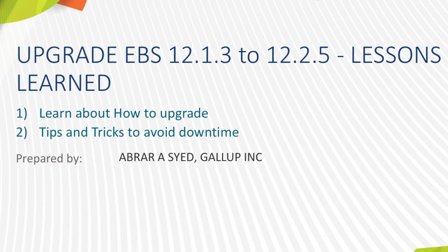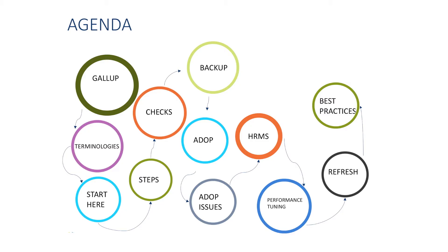Hi, my name is Abrar Saeed and I've been working as an Oracle DBA since 2008 with Gallup. I'm working for Gallup right now since 2011. Last year I got a chance to work on a project which was an EBS upgrade from 12.1.3 to 12.2.5. This is not an easy process because the upgrade takes a lot of time and you need a lot of knowledge to do that. I'm going to give you a few tips and tricks today on how you can go through the upgrade process.